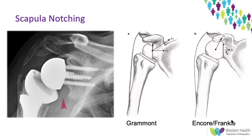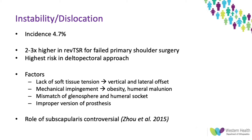In terms of instability and dislocation, the incidence in this review was 4.7%, and it's two to three times higher in patients having a reverse total shoulder after failed primary shoulder surgeries such as a previous hemiarthroplasty or a prior reverse total shoulder. The risk is increased with the deltopectoral approach, though I feel there are probably confounding factors with this, since it's the most commonly used approach and is more likely to be utilized by less experienced surgeons rather than, say, the superolateral approach.